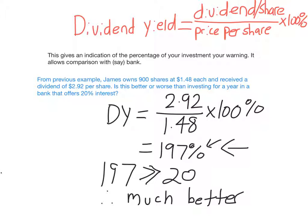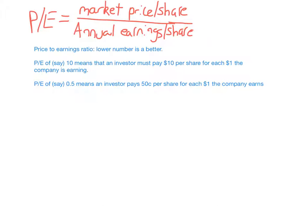There's one more example to cover — the P/E ratio, or price to earnings ratio. The formula is market price per share divided by annual earnings per share. It gives you one number — maybe 0.5, maybe 10 — that tells you how much an investor has to pay per share for each dollar the company is earning. A P/E of 10 means you pay $10 per share for every $1 the company is earning.